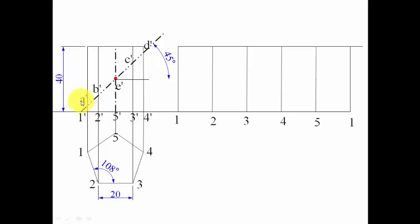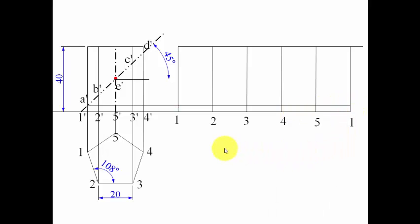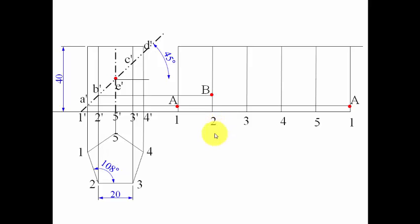To locate the intersection points on the development, we use the parallel line method. Drawing a horizontal line from point A' gives us point A above position 1 — marked on both sides. Point B is found by drawing a horizontal line from B', intersecting above position 2. Point E is found similarly, intersecting above position 5.